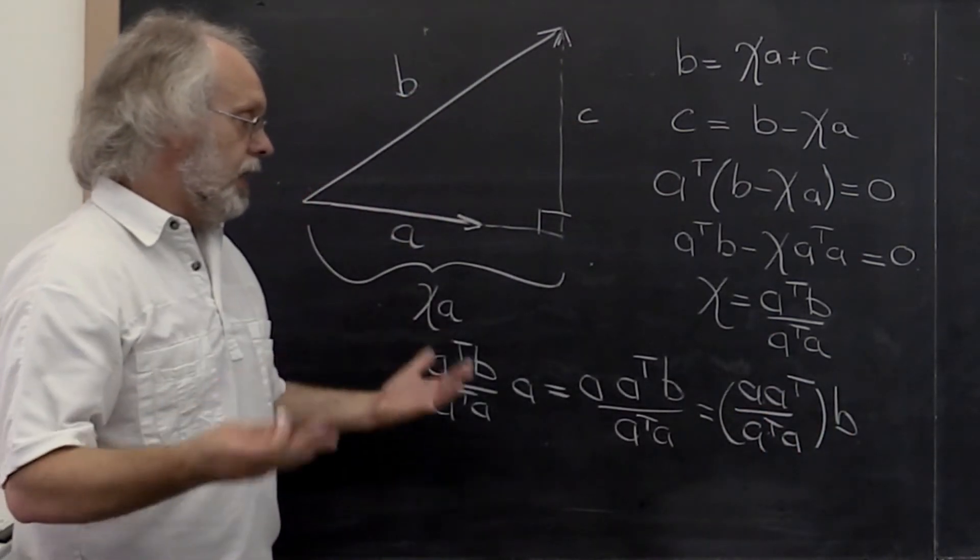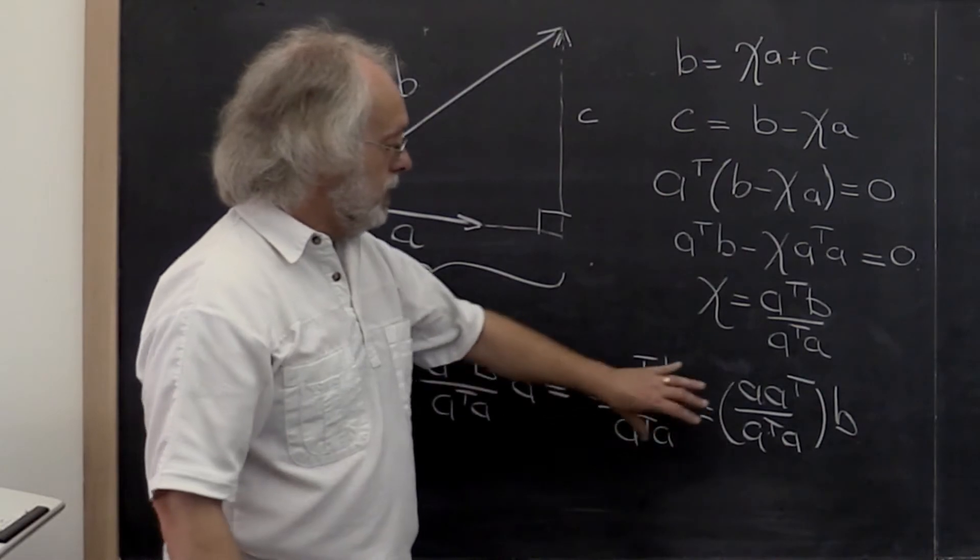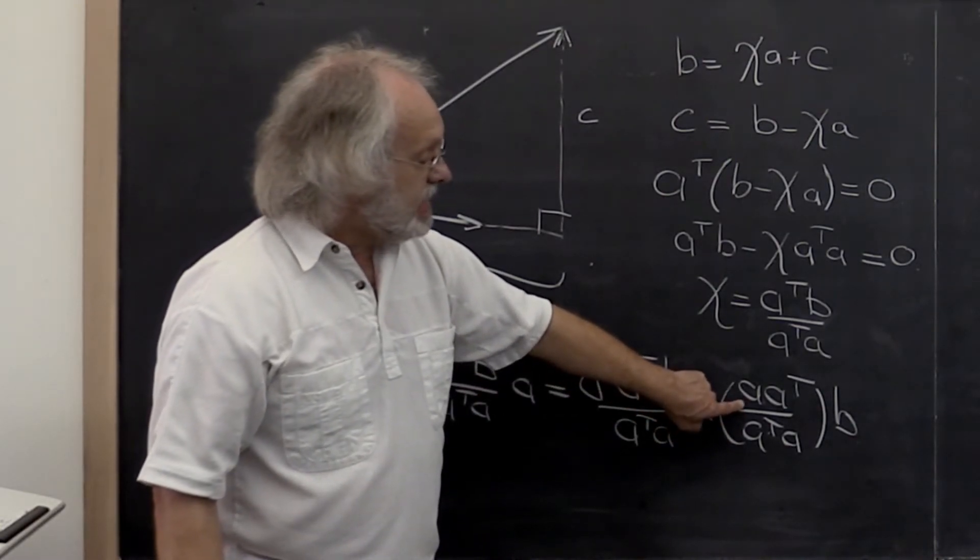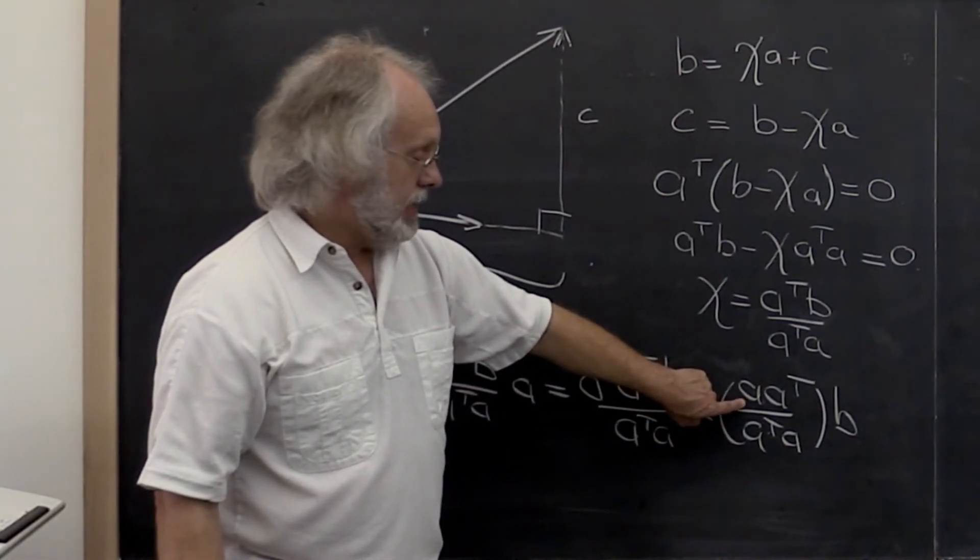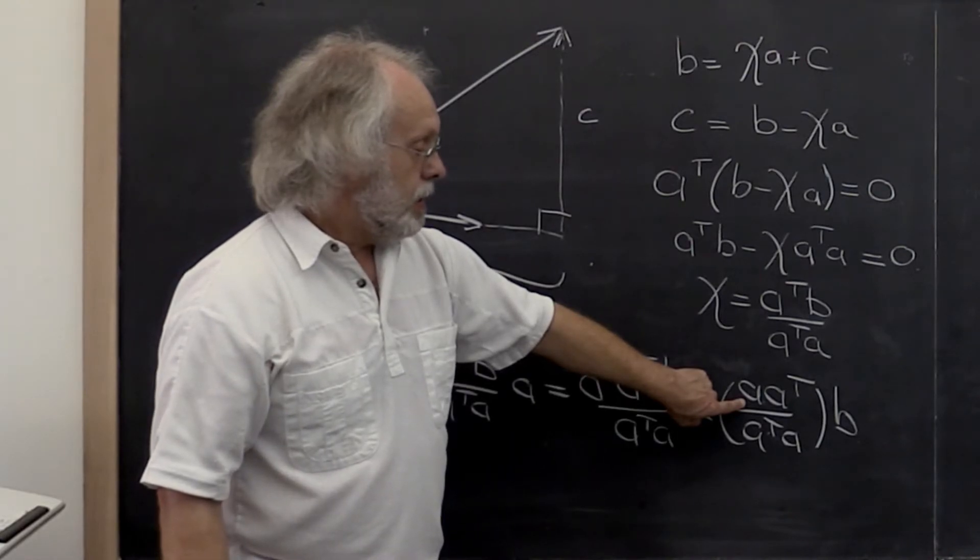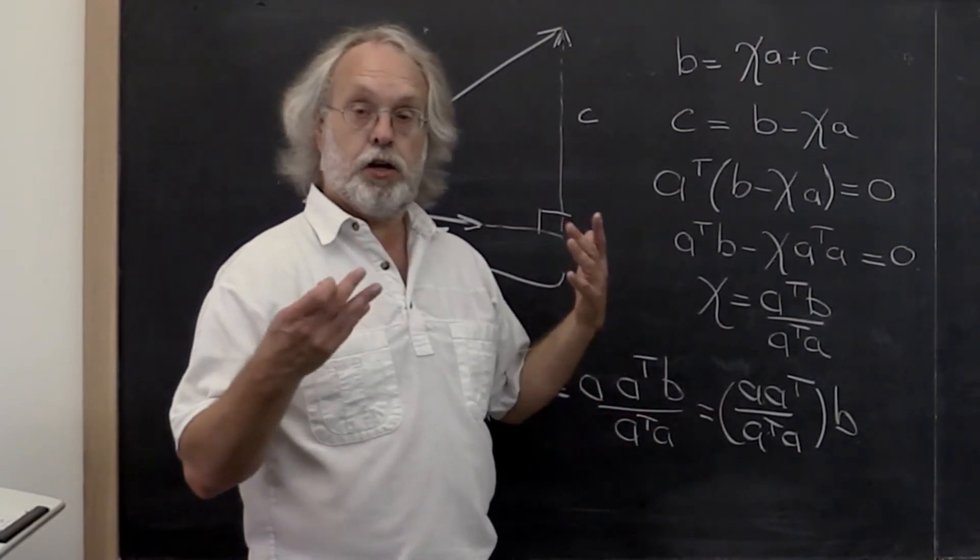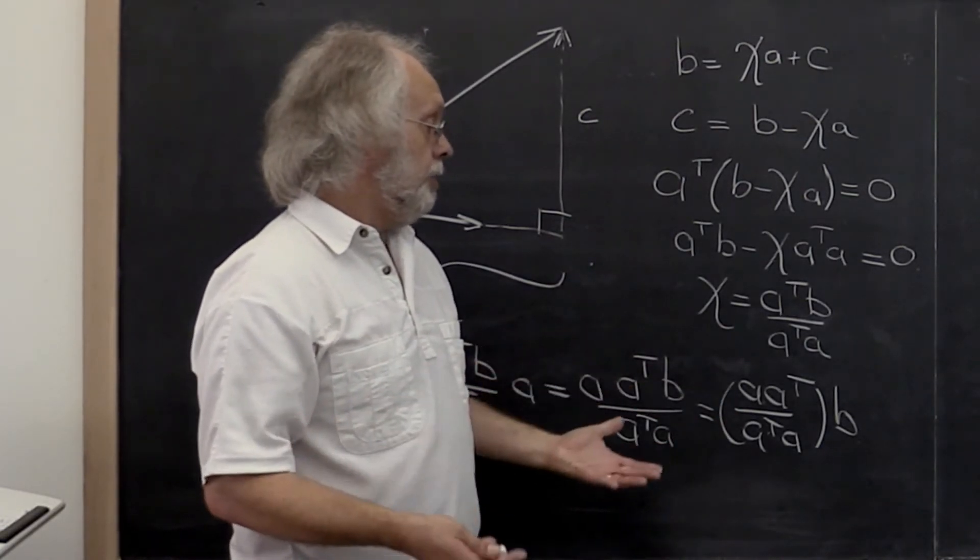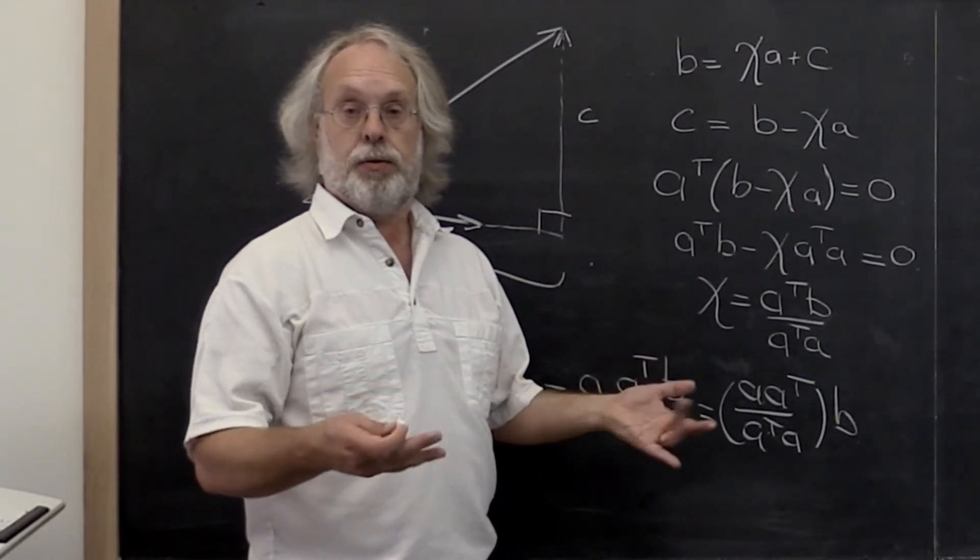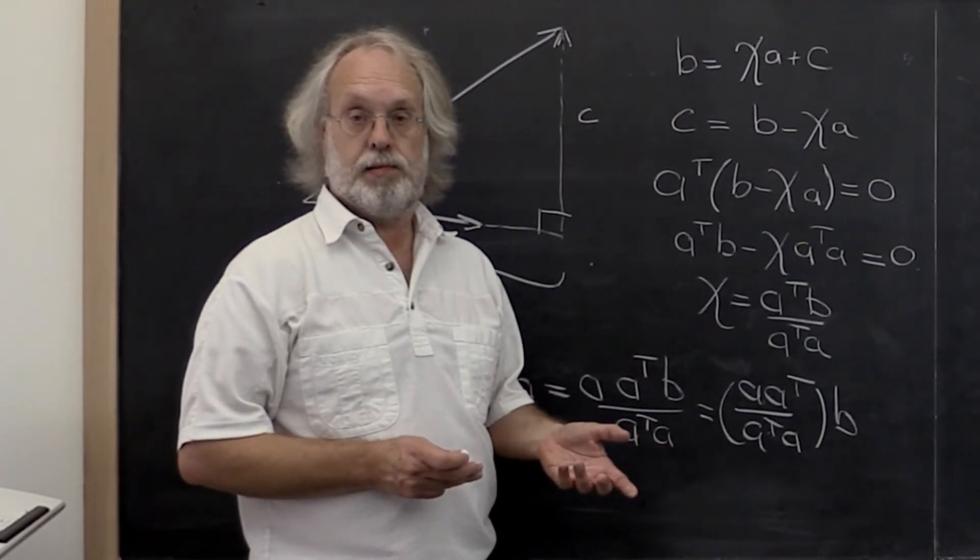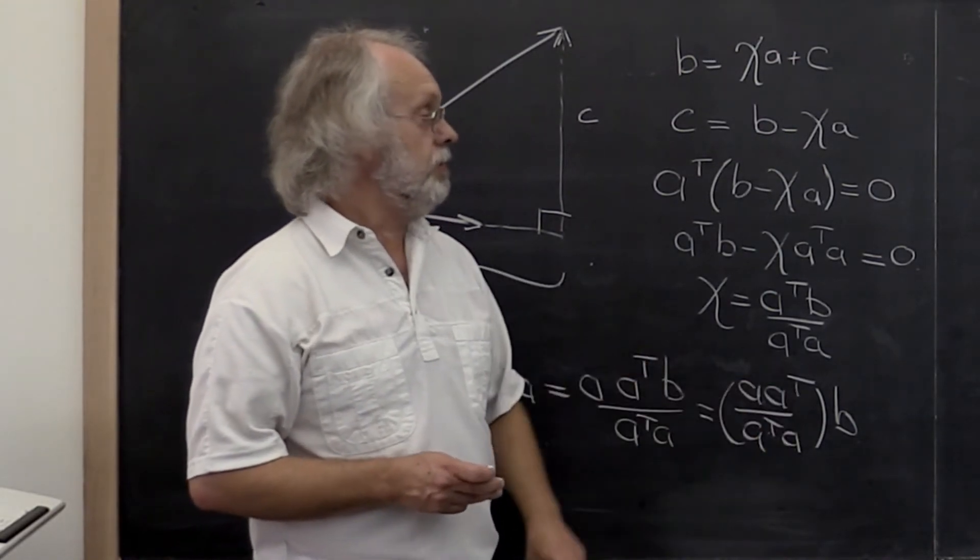And why do I like that so much? Because this tells me what the matrix is such that when I apply it to any vector, I get the component of that vector in the direction of A. So this is a projection vector.